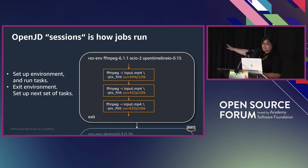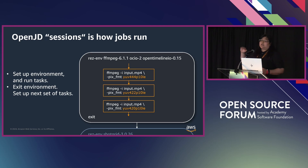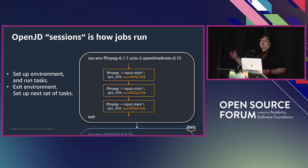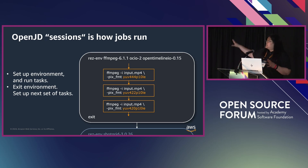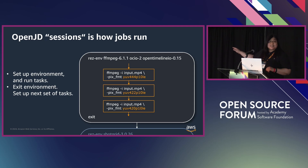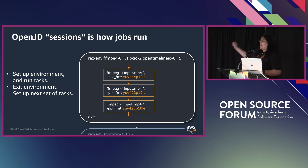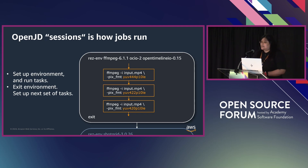Open Job Description sessions are a concept that bridges the gap between describing the work and how it is run. This is a simplified diagram of how those steps are put into practice, as codified by the OpenJD sessions package available via GitHub as well as PyPI Package Manager today. The simplest version is: we set up an environment, we run tasks until there are no more tasks for that step, then we exit the environment, set up the next series of tasks — ad infinitum — using that same FFmpeg example as earlier.